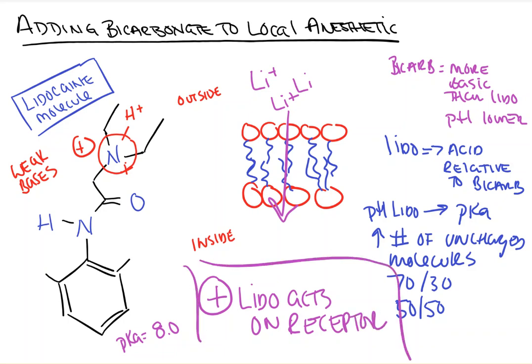And that's it. Adding bicarbonate to our local anesthetic will increase the speed of onset of the block by increasing the amount of uncharged local anesthetic available, making it easier and faster for it to pass through the cell membrane and reach the site of action. That's all for adding bicarb to local anesthetics — if you have any questions, please feel free to contact us, subscribe below, and stay tuned for the next video.